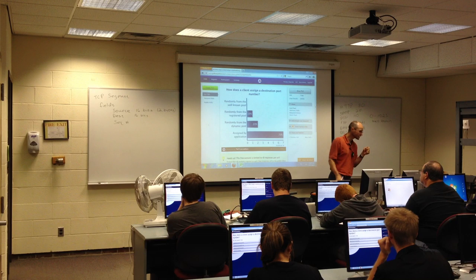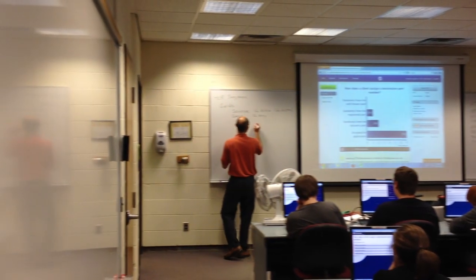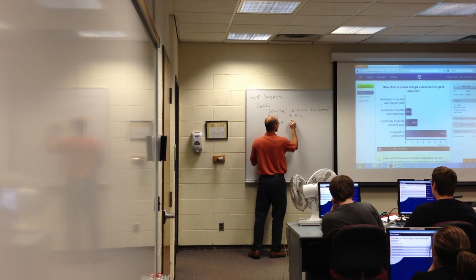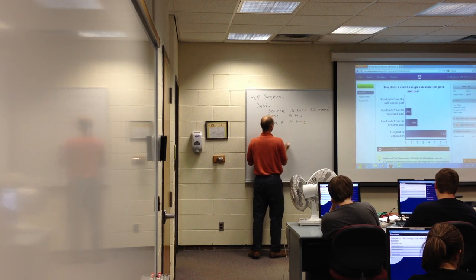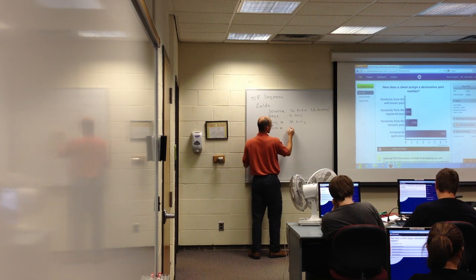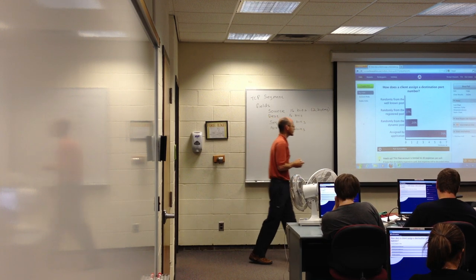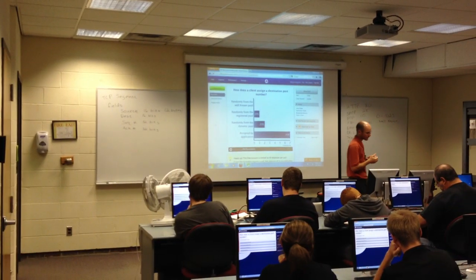Sequence numbers are 32 bits—I'll verify that for you; it's either 16 or 32, but I believe 32. The next field is called an acknowledgement number, which is the same size as the sequence number. I really do believe it's 32 bits, but I'll check.